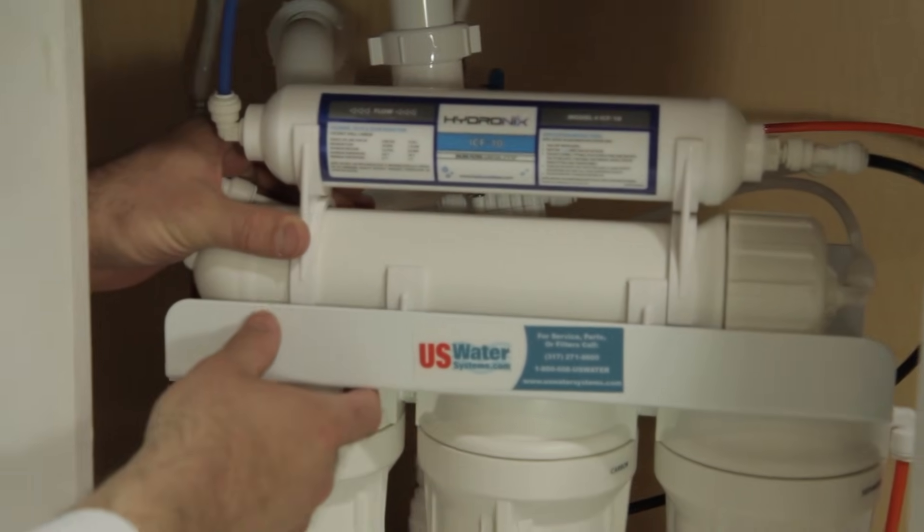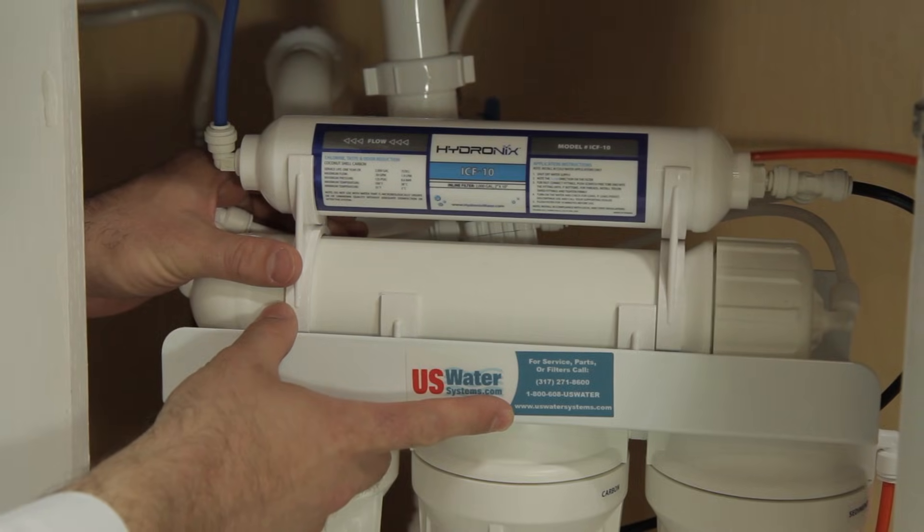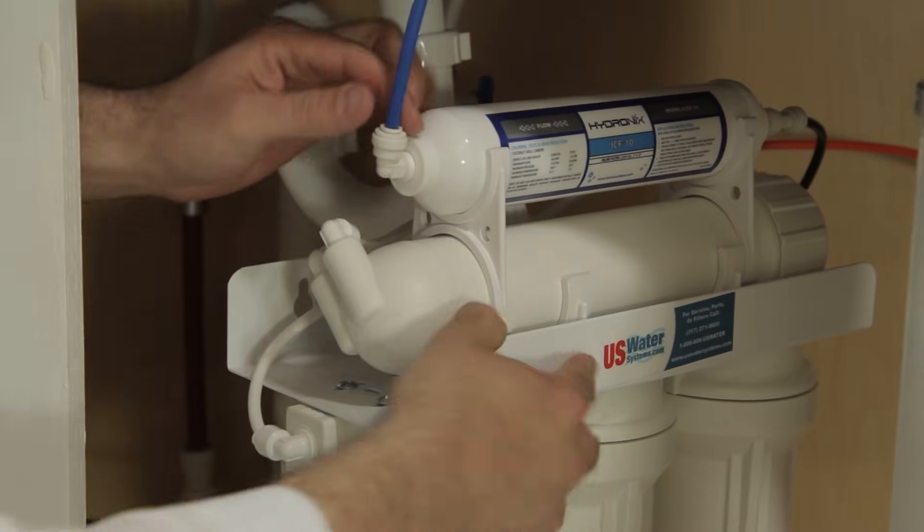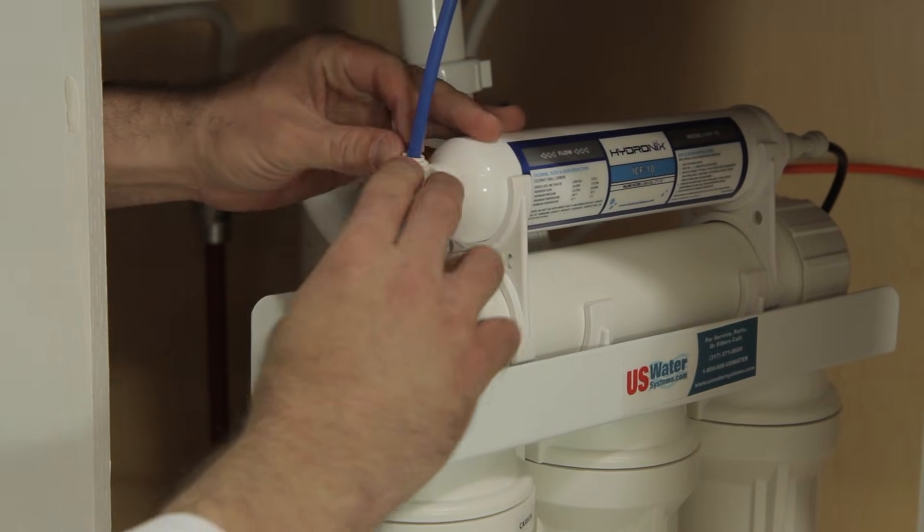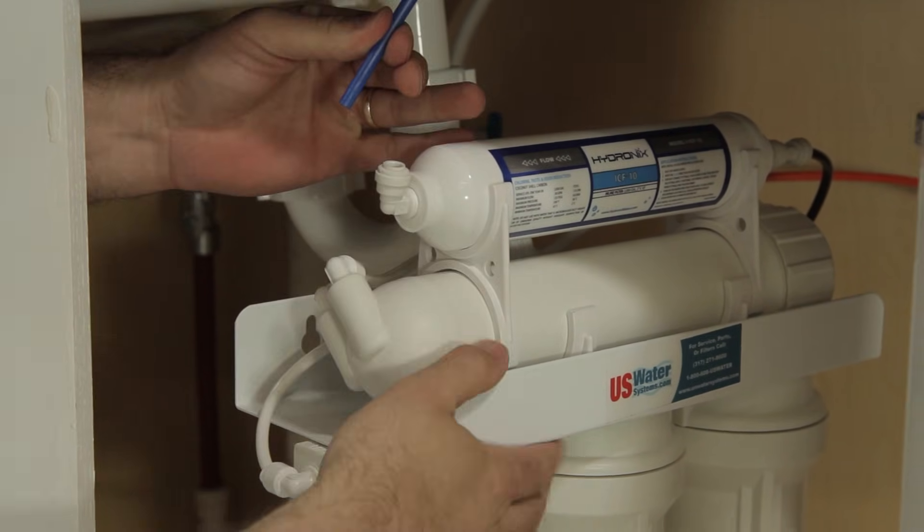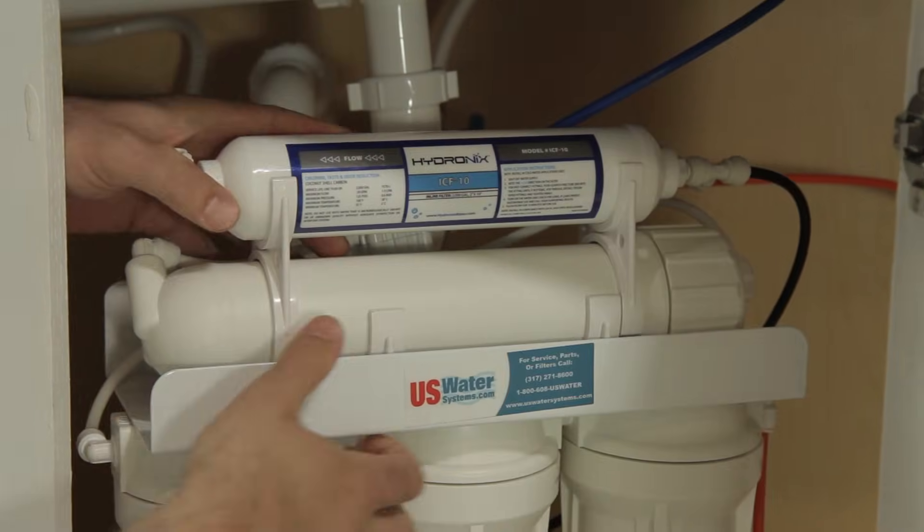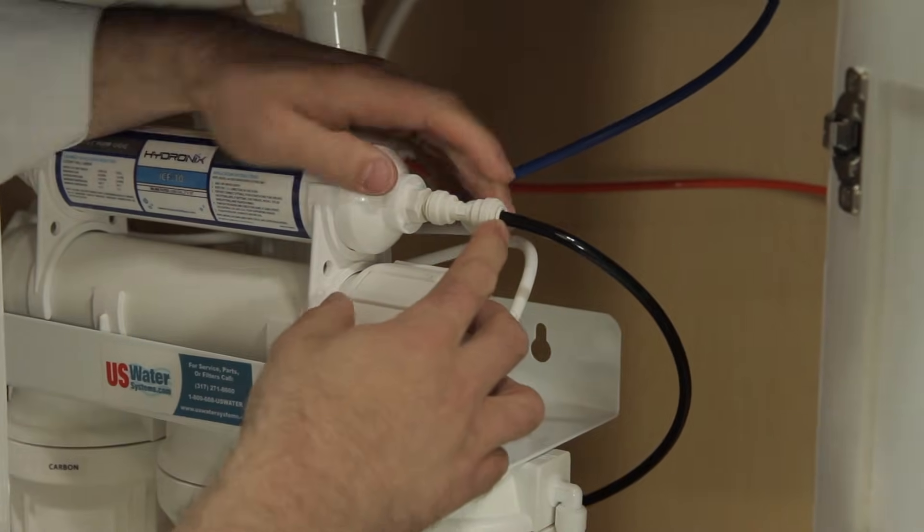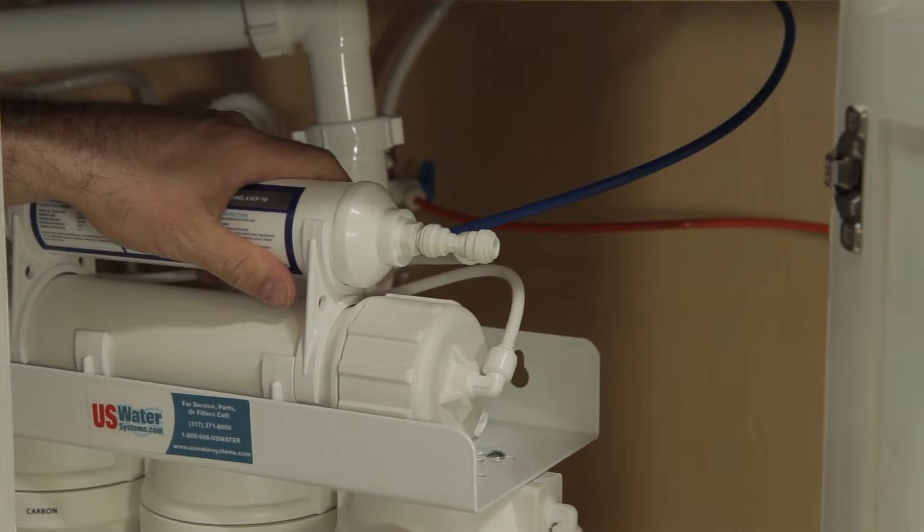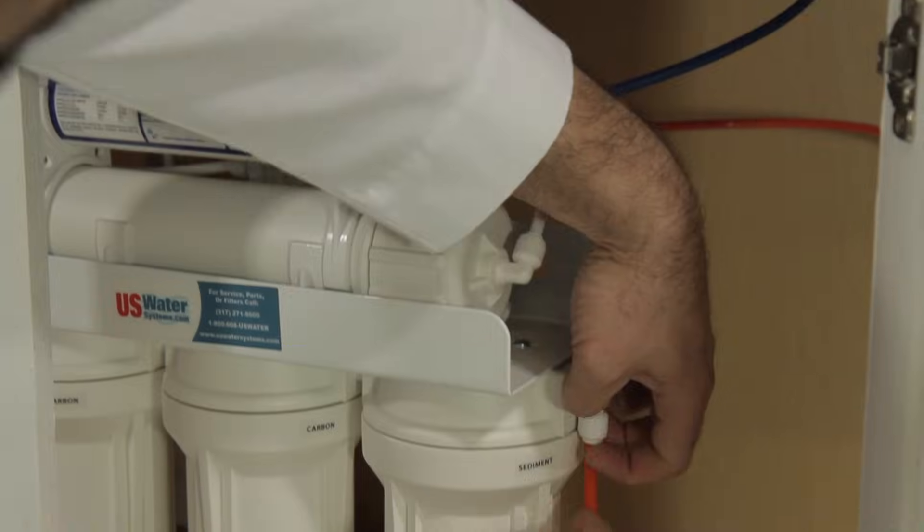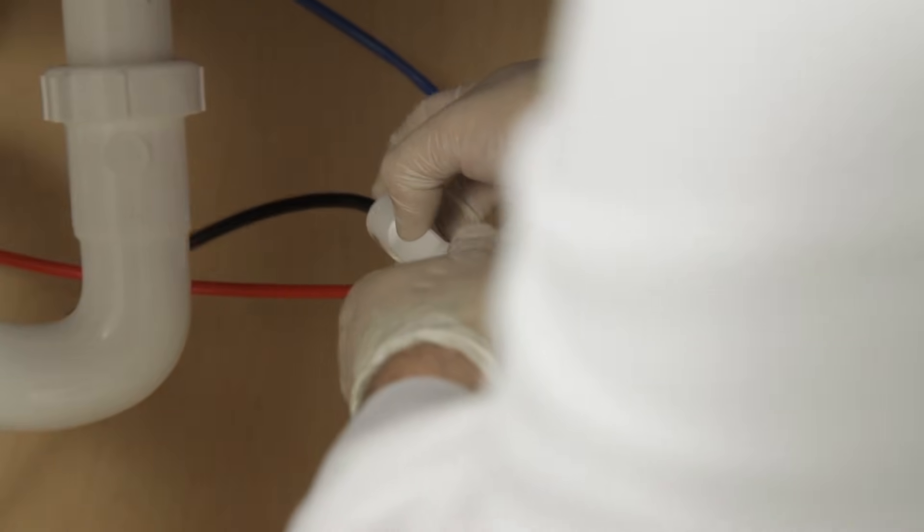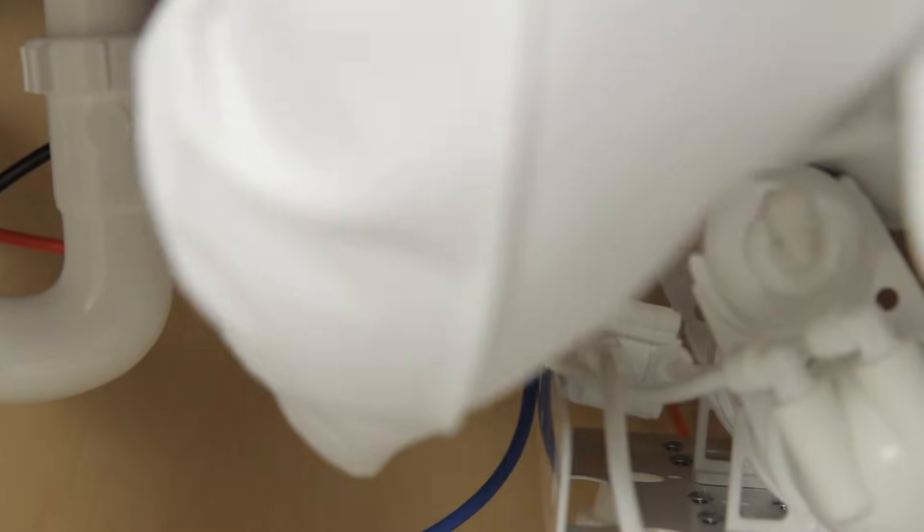You can change the filters under the sink, but what I like to do to make it easier is to disconnect the lines and bring it up on top. You have the fittings where you press the collet in and pull the tubes out. That one would go to your RO faucet. This one would go to your tank. And this is your feed, your inlet feed. And we're also going to disconnect the drain line by pushing the collet in, pulling out.